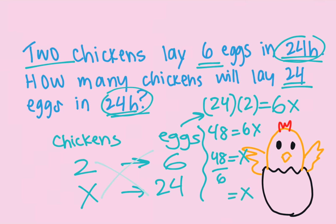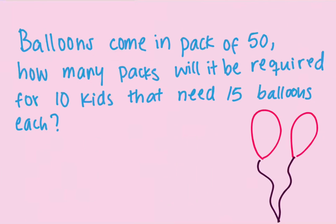48 divided by 6 is 8, so 8 chickens are needed to lay 24 eggs in 24 hours. I have two separate videos for this type of question — ratio and proportion — called the box method, so please go check that video. I also have a video on algebraic expressions and equations, so go check that one too.